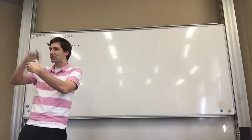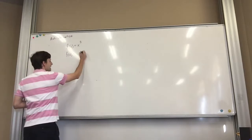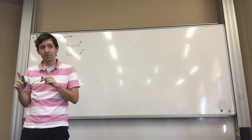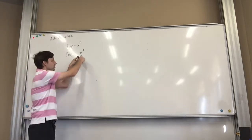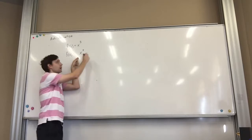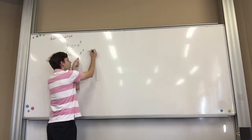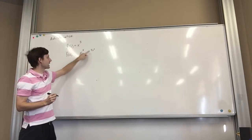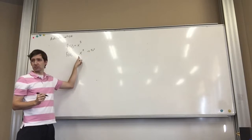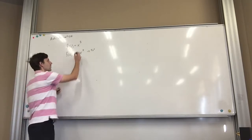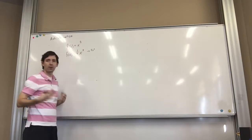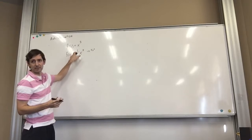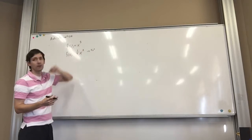Now, is it just x to the 4th? No — it's one-fourth x to the 4th. Because if I take the derivative of x to the 4th, I get 4x to the 3rd, which is close but not quite. So how do I make it x to the 3rd and not 4x to the 3rd? I divide by 4, or put one-fourth in front. Now if I take the derivative, the 4 times one-fourth cancels out, leaving me simply x to the 3rd.